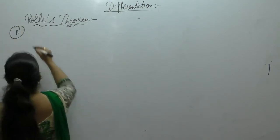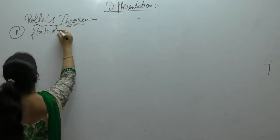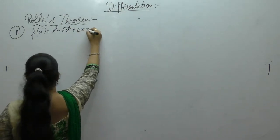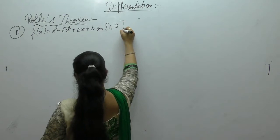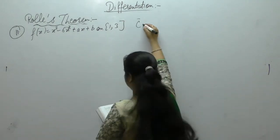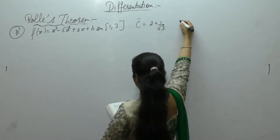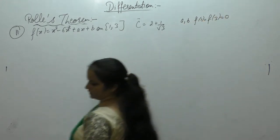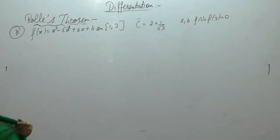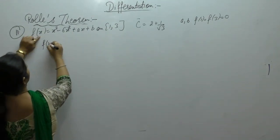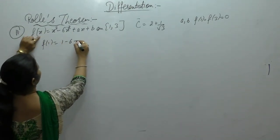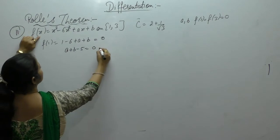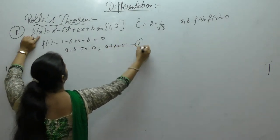It is given that for f(x) = x³ - 6x² + ax + b on [1, 3], Rolle's theorem holds with c = 2 + 1/√3. Find the values of a and b. It is given that f(1) = f(3) = 0. From f(1) = 0: 1 - 6 + a + b = 0, so a + b - 5 = 0, giving a + b = 5.